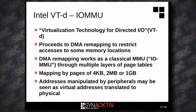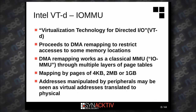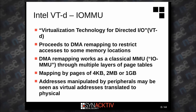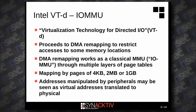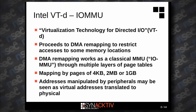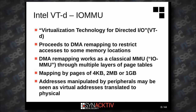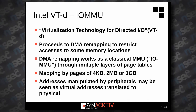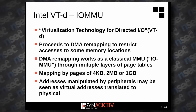Now we'll talk about the IOMMU. Intel implements what it calls Virtualization Technology for Directed I/O, also known as VT-d. Basically this is the IOMMU. Its purpose is to perform DMA remapping in order to control which memory locations are reachable and by whom. This DMA remapping works like a classical MMU — hence the term IOMMU — in that it takes addresses manipulated by peripherals and translates them to physical addresses.